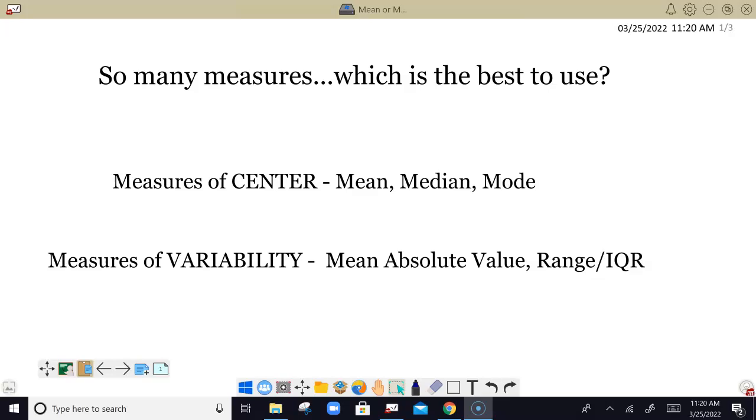So just as a refresher here, measures of center, we've talked about mean, median, and mode, and measures of variability. We haven't really calculated, or we don't need to calculate the mean absolute value, but that is one measure of how far spread out data is. But we have talked quite a bit about range and the interquartile range. So those two are both measures of variability that we will be deciding which one is the best to use right here.